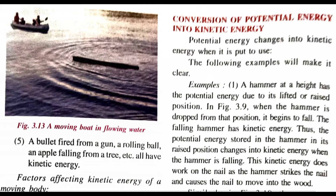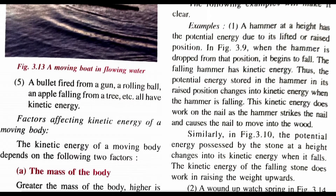Conversion of potential energy into kinetic energy — here are examples. The hammer has potential energy due to its lifted or raised position. When the hammer is raised, it has potential energy and is at rest. When the hammer is dropped from that position, it begins to fall and has kinetic energy. Thus the potential energy stored in the hammer in its raised position converts into kinetic energy as it falls. This kinetic energy does work on the nail as the hammer strikes it, causing the nail to move into the wood.